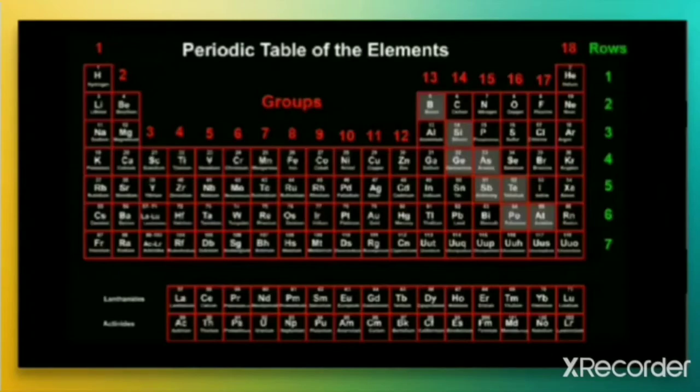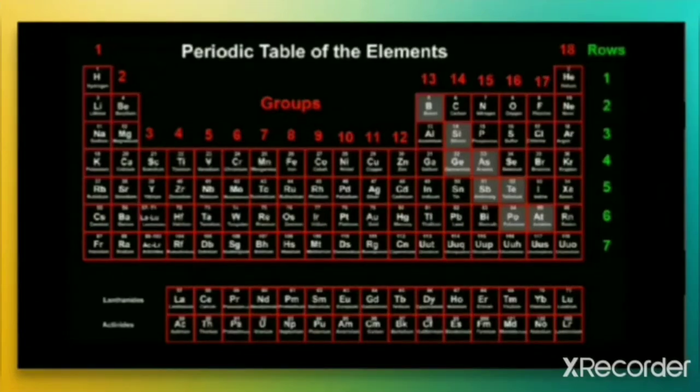There are also vertical columns and horizontal rows. Horizontal rows are called periods and vertical columns are called groups. Let us now discuss why a particular element is in a particular period and in a particular group, and first discuss electronic configuration in periods.